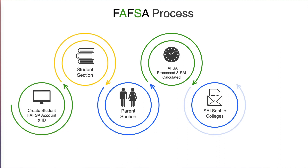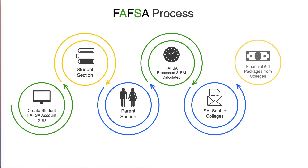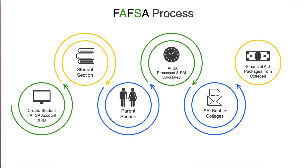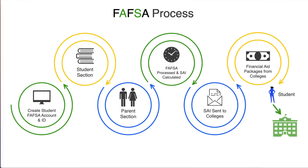Based on that information, colleges create financial aid offers that may include grants, loans, and scholarships, which are then sent to the student to help them make a decision about which college would be financially feasible.